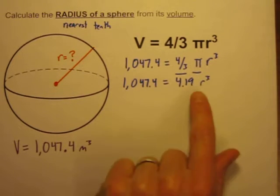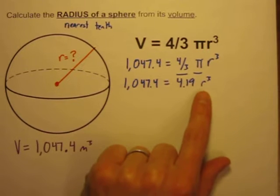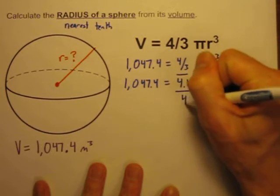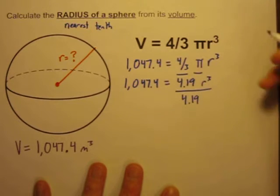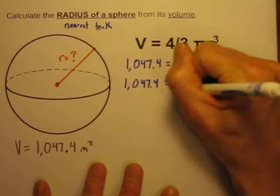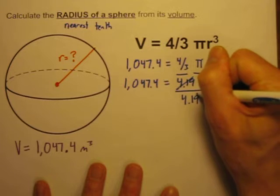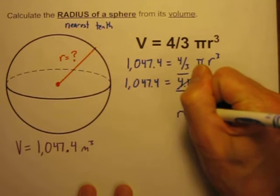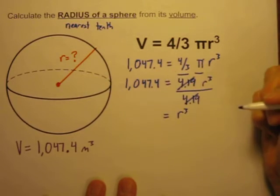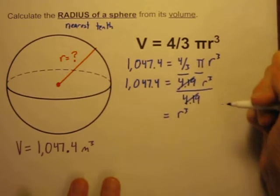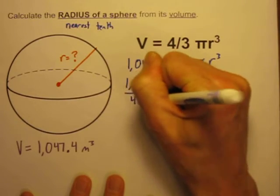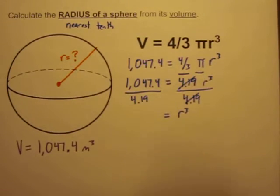So how do I get the radius by itself? Well, the opposite of multiplying that by 4.19 is to divide it by 4.19. And the benefit here is that 4.19 divided by 4.19 is equal to 1, leaving r to the third power all by itself. And if I divide the right side by 4.19, I'm going to divide the left side by 4.19.